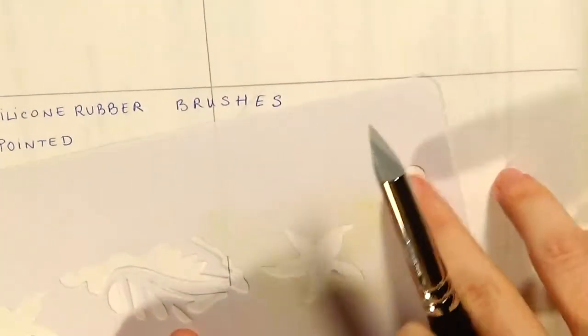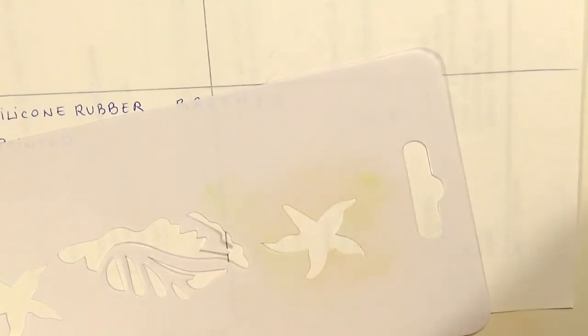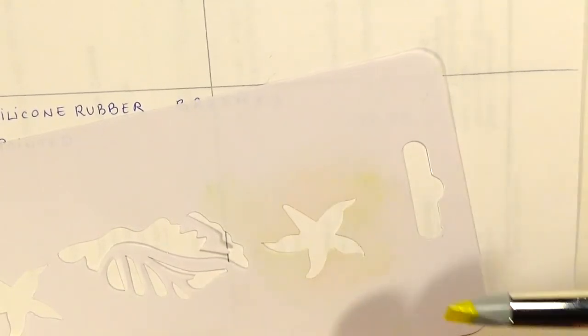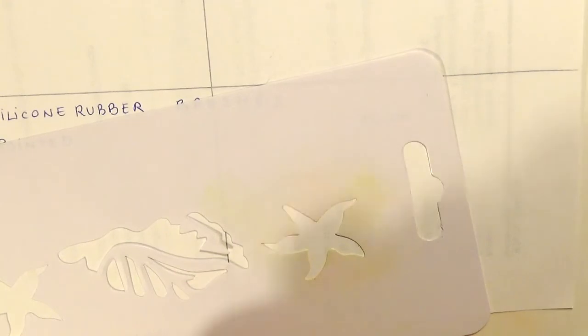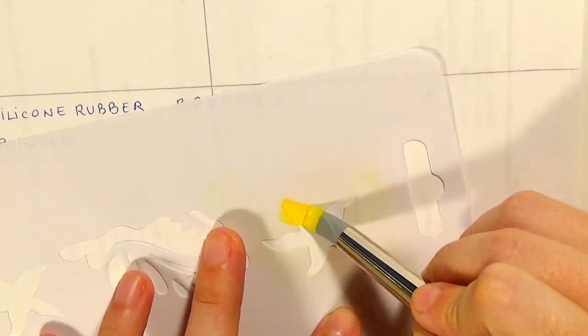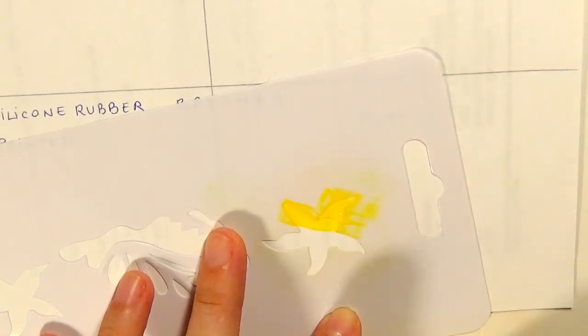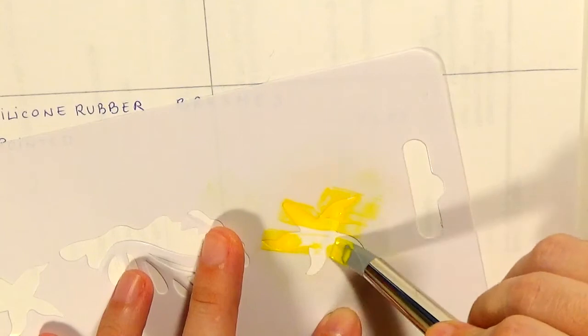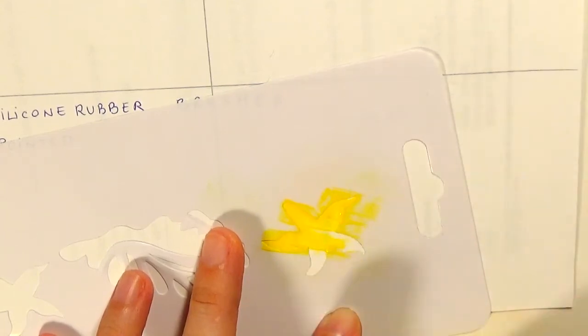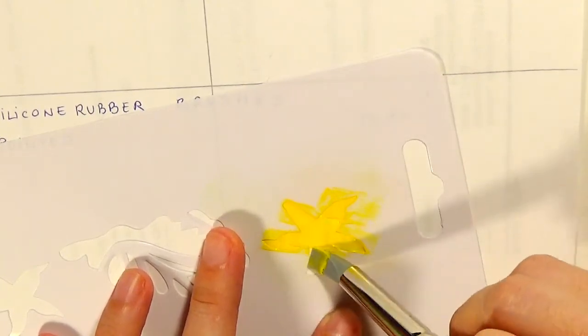You can create a simple model by putting the plastic sheet like this and applying the color using the silicone rubber brush.